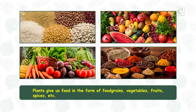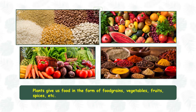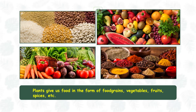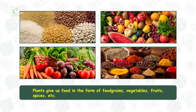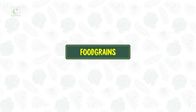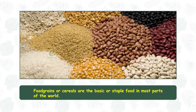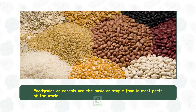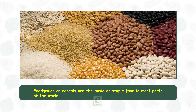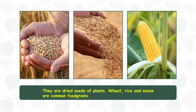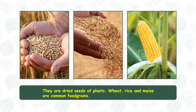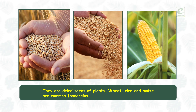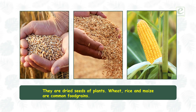Plants give us food in the form of food grains, vegetables, fruits, spices, etc. Food grains or cereals are the basic or staple food in most parts of the world. They are dried seeds of plants. Wheat, rice, and maize are common food grains.